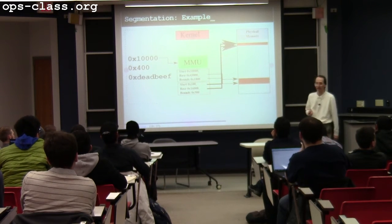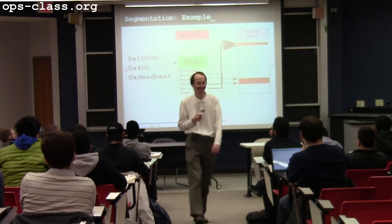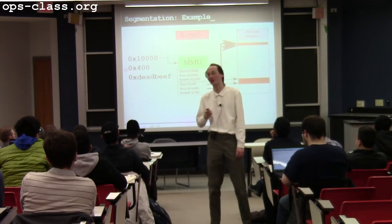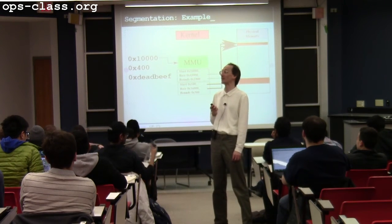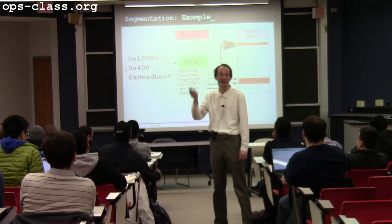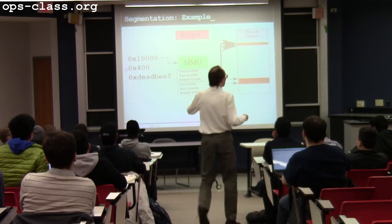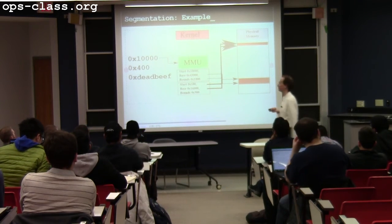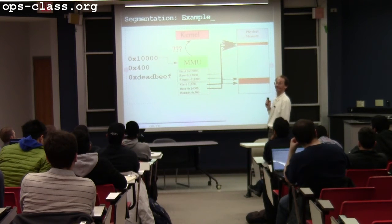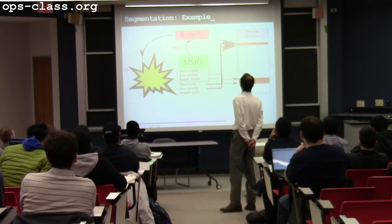If you access an address like 0xDEADBEEF it means it's invalid — it's a debugging tool deliberately used to flag bad addresses or values. If a process tries to access something outside its segments, the result is a segmentation fault. In Assignment 3 you get to enforce the segmentation fault and kill off bad user processes.